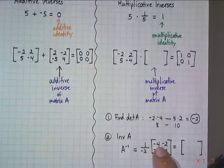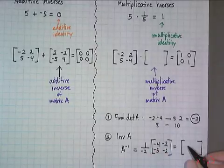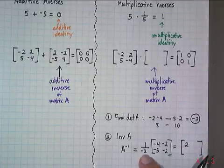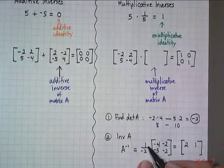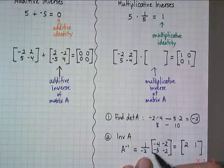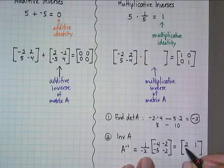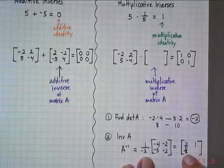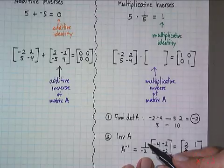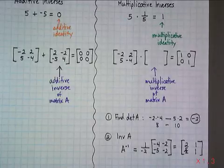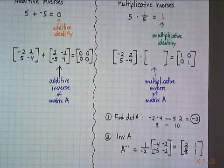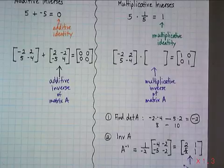Negative one half times 4: negative times negative is positive, half of 4 is 2. Negative one half times negative 2 gives positive 1. Negative one half times 5: negative times negative is positive, which is 5 halves or 2 and a half. Lastly, negative one half times 2 is positive 1. So this matrix is the inverse of A, or A to the negative first power.